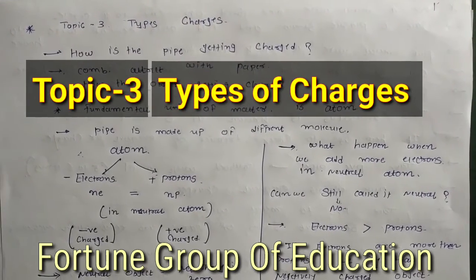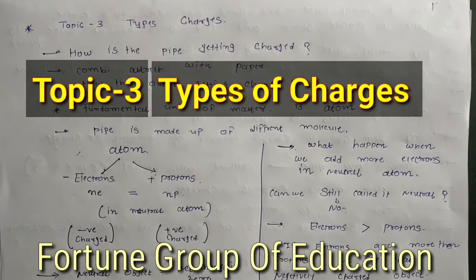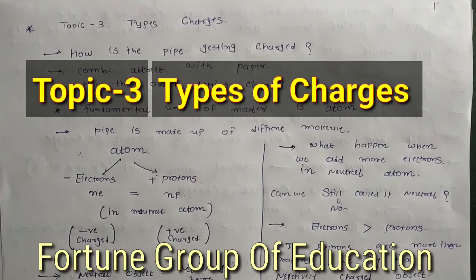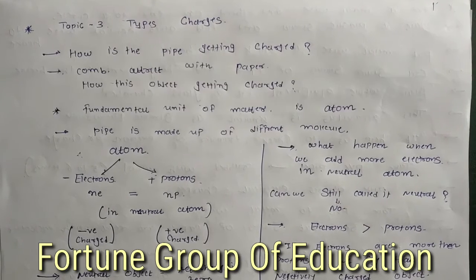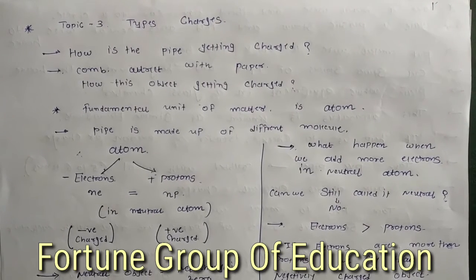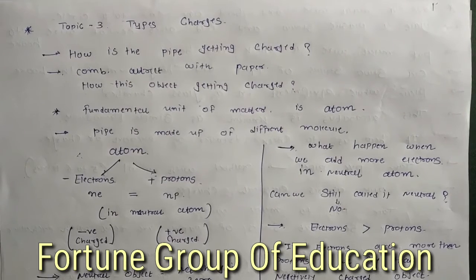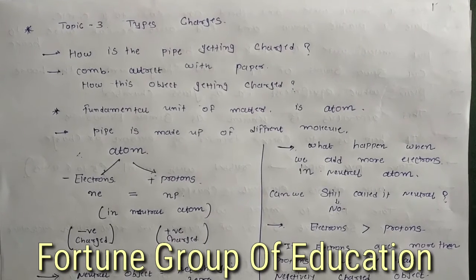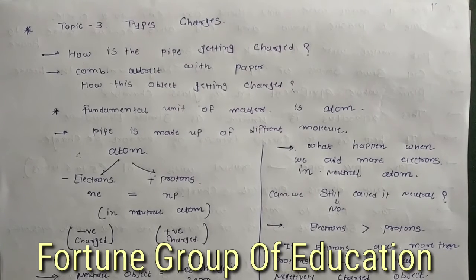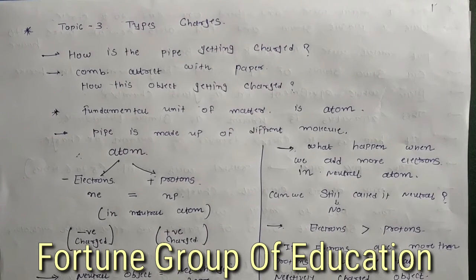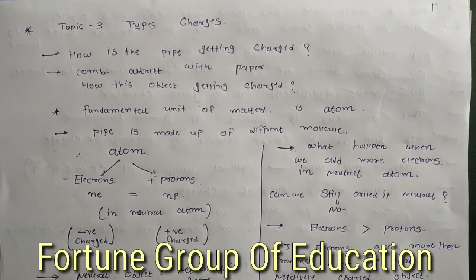Hello friends, topic number 30 is types of charges. First of all, we have questions in our mind: how is the pipe getting charged? Also, how does an object like a comb attract paper? How are these objects getting charged? There are lots of questions about types of charges and how things become charged.